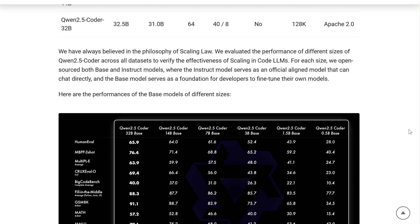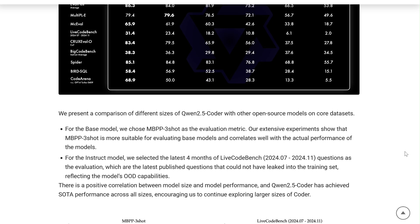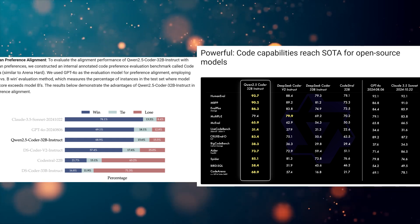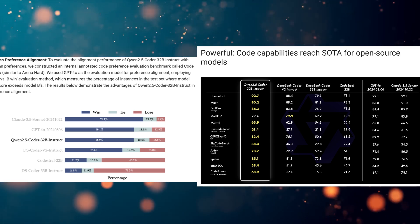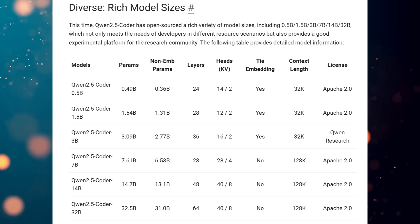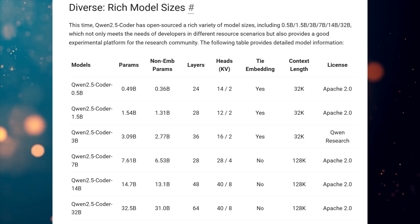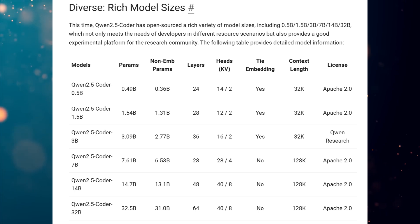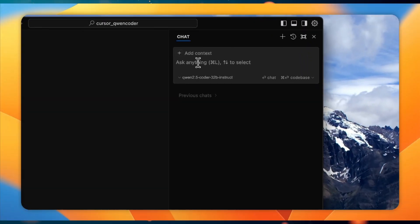Powerful. This model is seriously powerful. It excels in code generation, code repair, and code reasoning, achieving state-of-the-art performance among open-source models on several benchmarks. It even rivals the coding capabilities of GPT-4o. Diverse. Qwen 2.5 Coder comes in a range of sizes, from a compact 0.5B model all the way up to a massive 32B model. This means there's a Qwen 2.5 Coder model to fit your needs and resources, whether you're a hobbyist developer or a large organization.